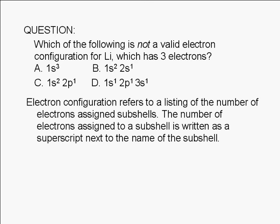The term electron configuration refers to a listing of the number of electrons assigned to subshells of an atom. The number of electrons assigned to a subshell is written as a superscript next to the name of the subshell. For example, in choice B, two electrons are assigned to the 1s subshell, and one electron is assigned to the 2s subshell.